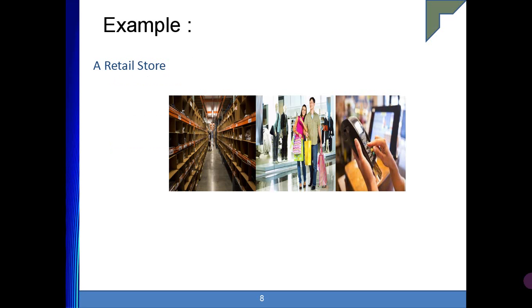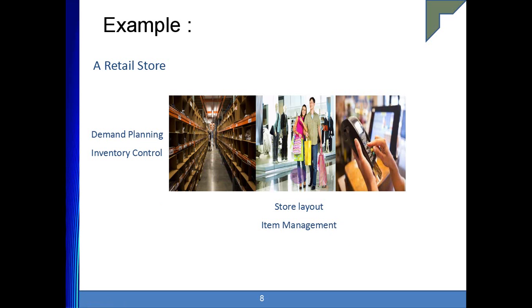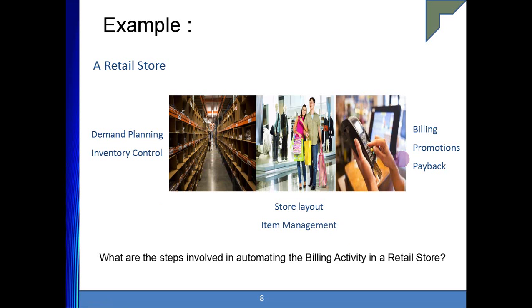Let us take an example of a retail store. In a retail shop, this involves inventory control, demand planning, store management, item layout, billing, promotions, and payback schemes. The problem is that you need to automate the billing activities in this retail store. So the question is: what are the steps involved in automating the billing activities?